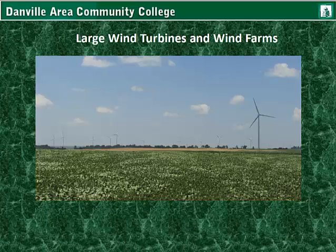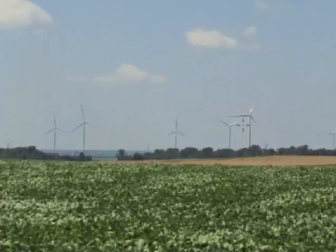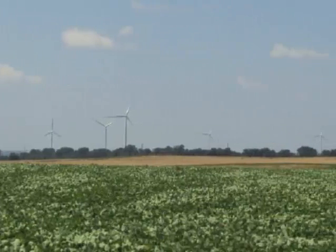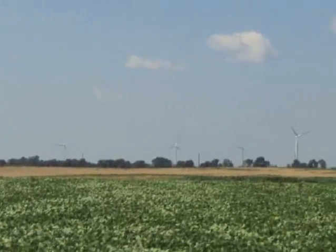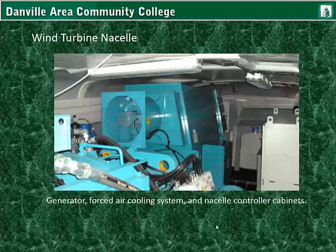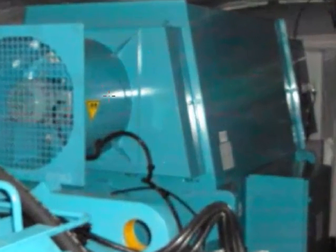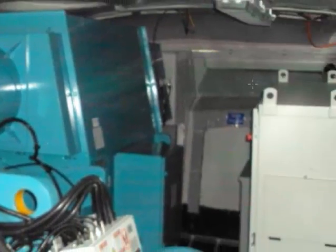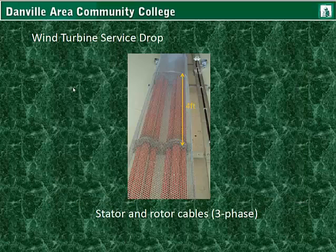Getting away from the grid and residential systems, let's go into the large wind turbines and their systems. An IPP has contracted the installation and connections of these towers, and they monitor their output into the grid. These large systems are called wind farms because they are harnessing or farming the wind for energy production. The wind turbine nacelle houses the generator, gearboxes, and other components, including a forced air cooling system and nacelle control cabinets. From the generator, there are stator and rotor cables — three-phase AC — and they go down the tower to the base.